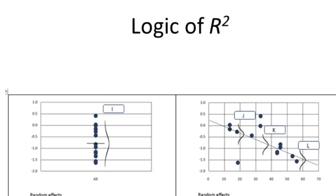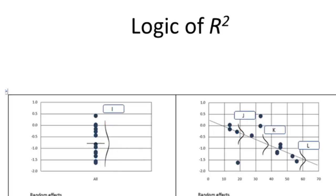Given that, if you put a number on the error variance when we have latitude and compare it to the error variance when we don't have latitude, the ratio gives us the variance explained by latitude. That's how we compute something analogous to R-squared — the proportion of variance explained by the predictor.